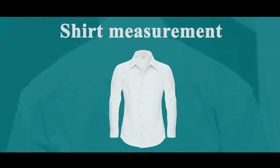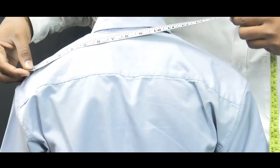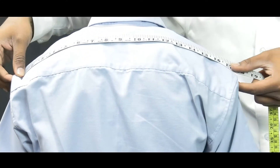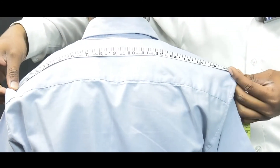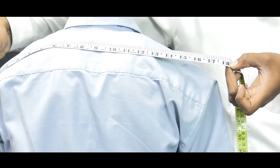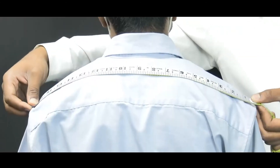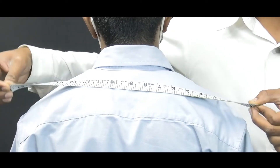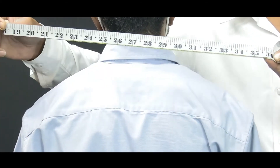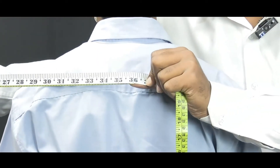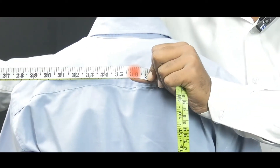In the shirt, first take the shoulder measurement from one shoulder end to another shoulder end. If it is coming 18, the shirt size will be 36, and the shirt is correct.